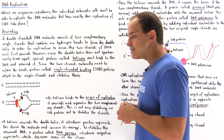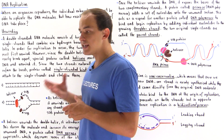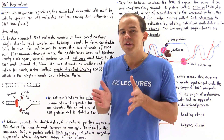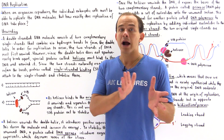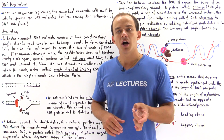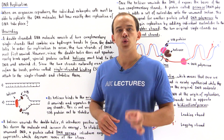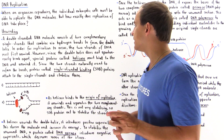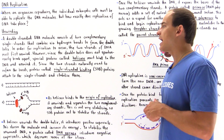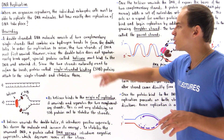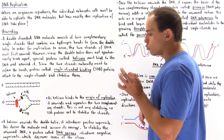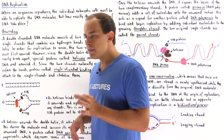What exactly is the first process that takes place when our DNA replicates? Before our DNA is replicated, what must happen is our double-stranded DNA molecule must actually unwind. So we see that in order for replication to actually occur, the two strands of DNA must first unwind.